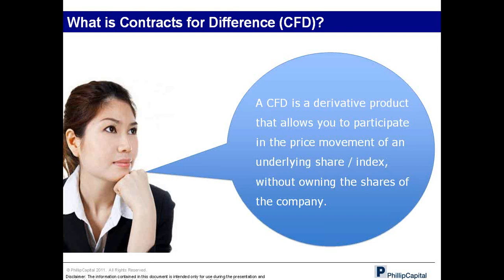Let's look at the basics of what a CFD is. A CFD is short for Contracts for Difference, and it's a derivative product that allows you to trade the price movement of an underlying asset. Popular assets for CFDs include shares and indices. The value of a CFD is derived from the underlying assets — shares or indices — and when you invest in CFDs, you do not actually own the shares of the company or the basket of companies in an index.